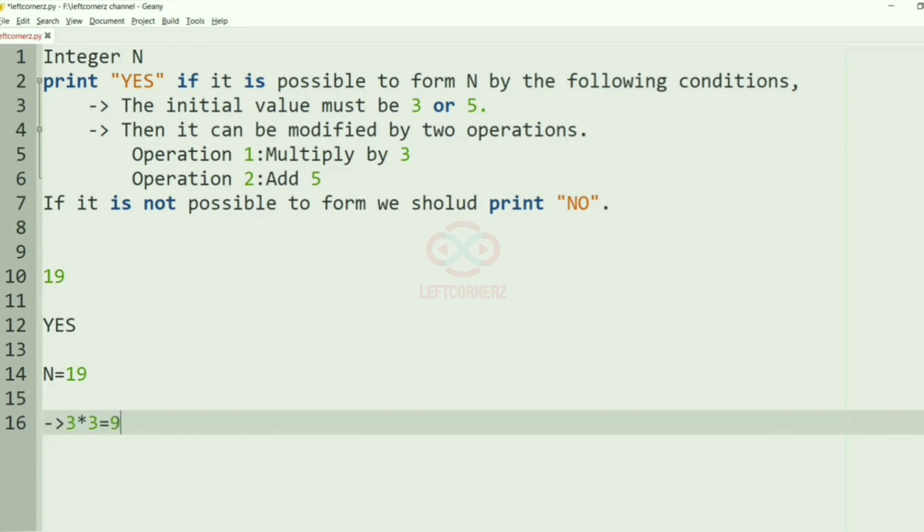So we'll multiply by 3 first, so we get 9. Then also we are not getting the integer, so we'll add it by 5, so we get 14, but the required integer is 19.